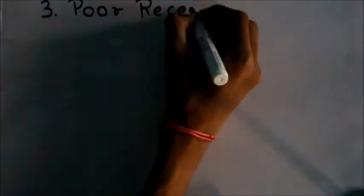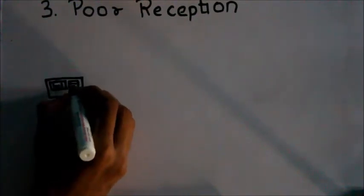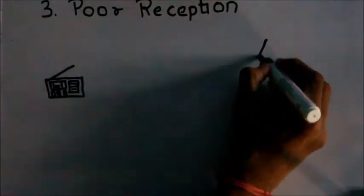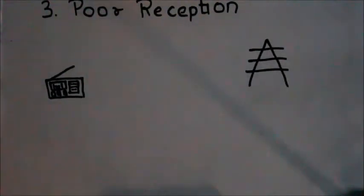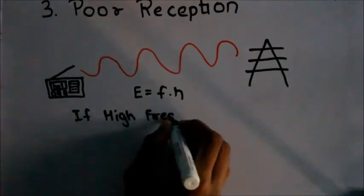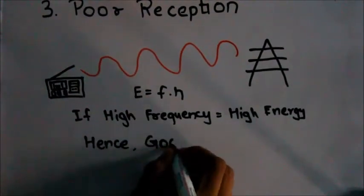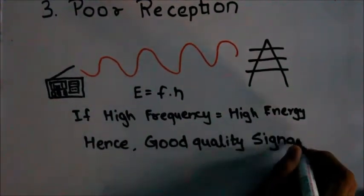For the problem of poor reception, according to the equation that we have seen earlier, E equals H F. For high frequency signals, the energy of the wave will be high, and hence the quality of the signals at the reception end would be good.